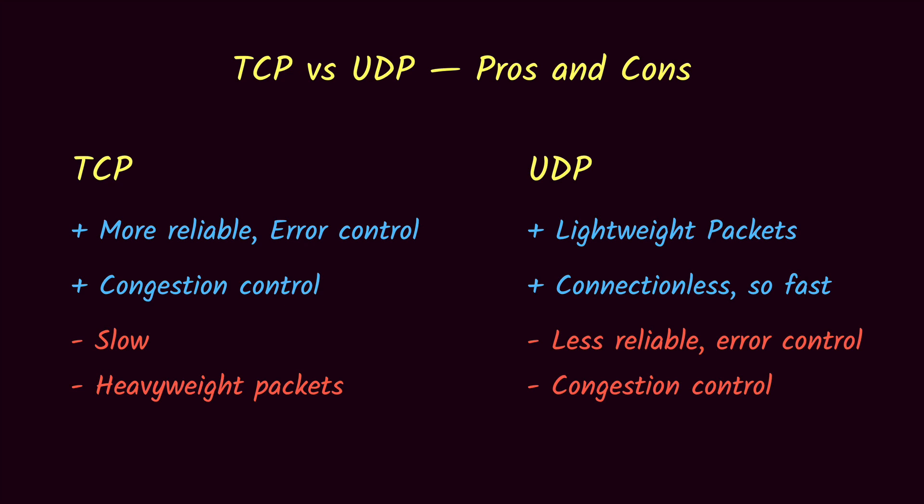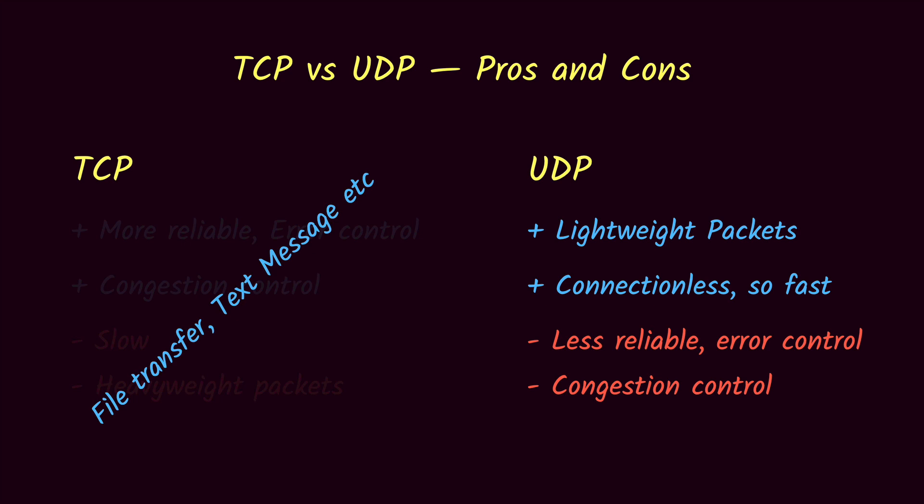Looking at the pros and cons — TCP is more reliable due to error control and retransmission of lost packets, and congestion control helps reduce packet loss. However, TCP is slower because of the three-way handshake, packet acknowledgements, and larger packet size of 20 bytes per header. TCP is used when strictly reliable data transmission is needed and packet loss is unacceptable, such as file transfer and text messaging.